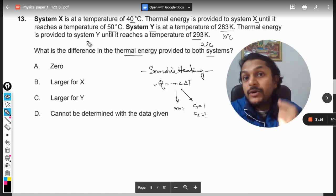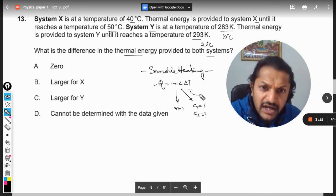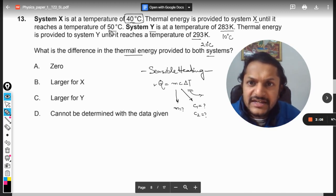Nothing is given here. They are only talking about delta T. Now delta T is the same in both of the cases. You see, 40 degrees C converted into 50, and here basically 10 degrees C is converting into 20.